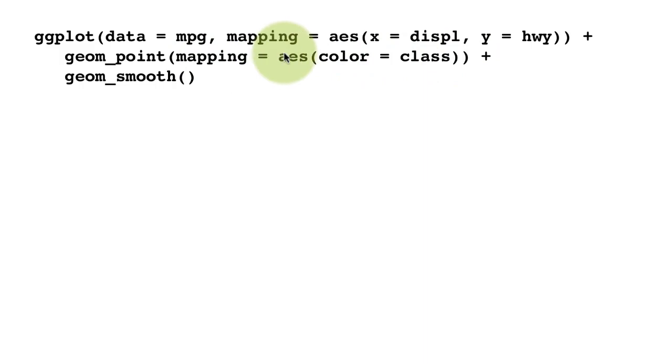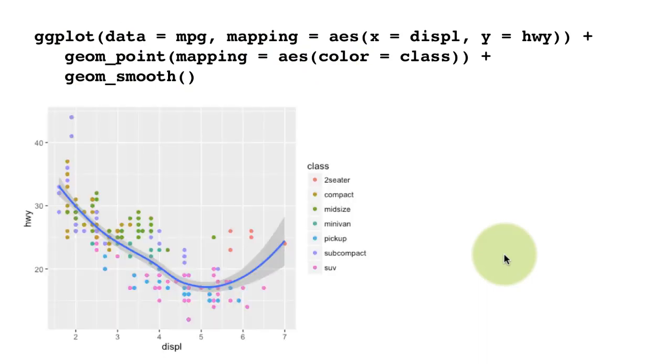So the X and Y AESTHETIC are still going to come from the definition we did within the ggplot call and only the color AESTHETIC is going to come from geom_point. So if you do this, obviously, you're going to get what we saw in the previous slide except the points are going to be colored differently. So no impact on the smooth layer. The smooth layer is just like it used to be, but this scatterplot layer, that your point layer has changed in that each point is now colored depending on the class of the vehicle.